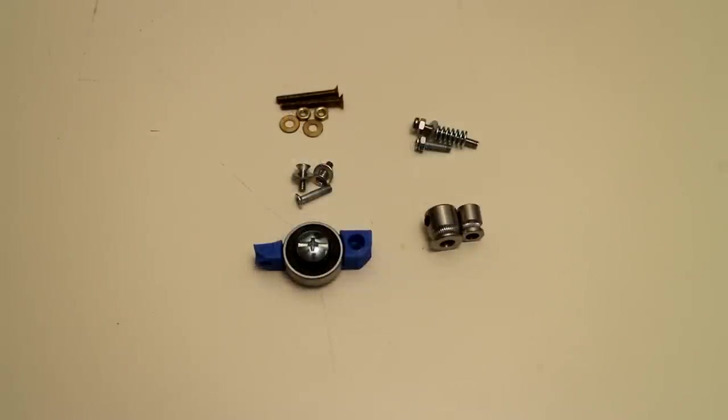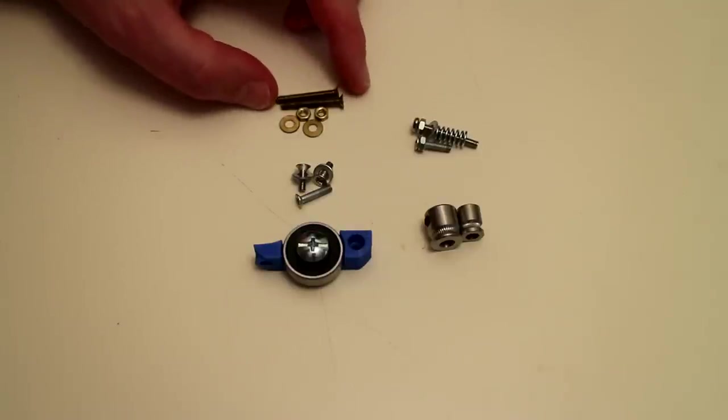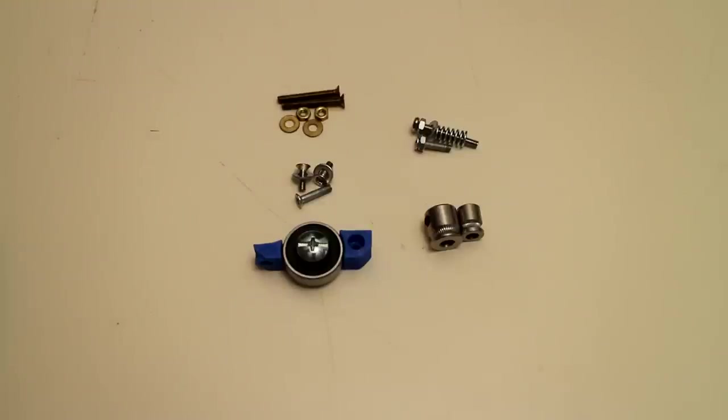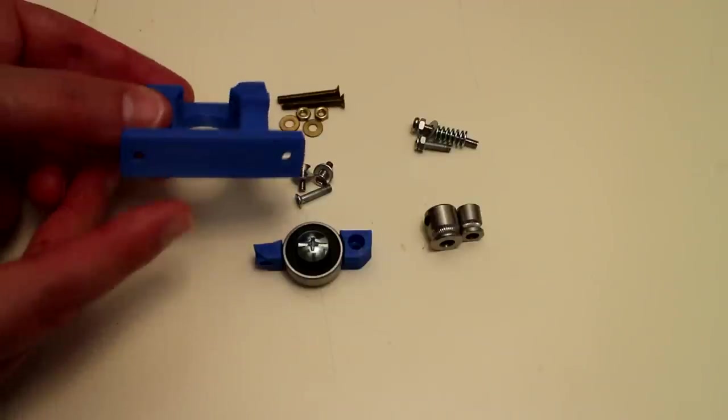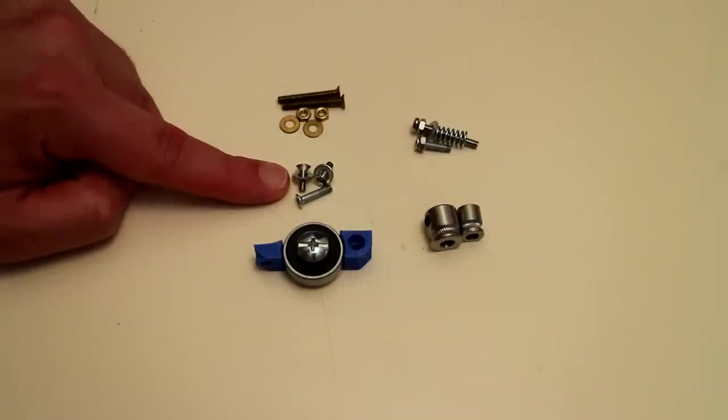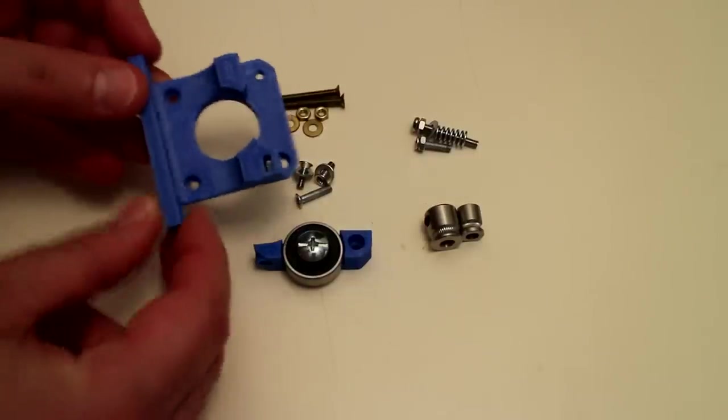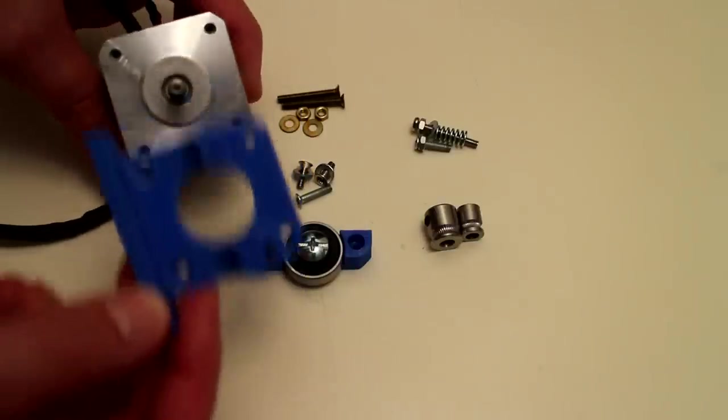We have various lengths of M3 screws. Up here we have 25 mm by M3 with matching washers and nuts. They are used to secure the base of the Bowden mechanism to the frame of the 3D printer. We have two 10 mm M3 screws with matching washers and also a 15 mm M3 screw. They are used to mount the base of the Bowden mechanism to the stepper motor.